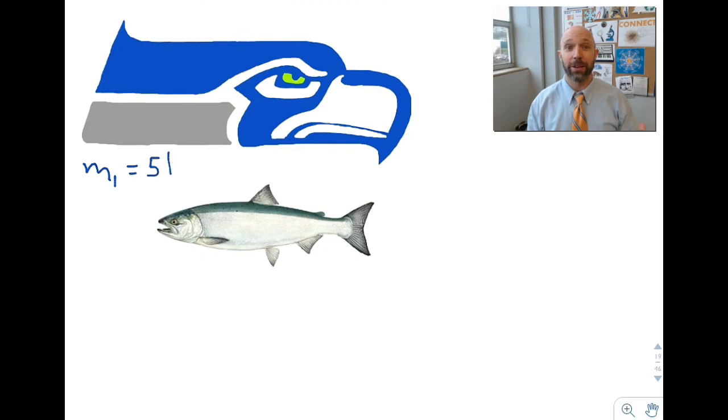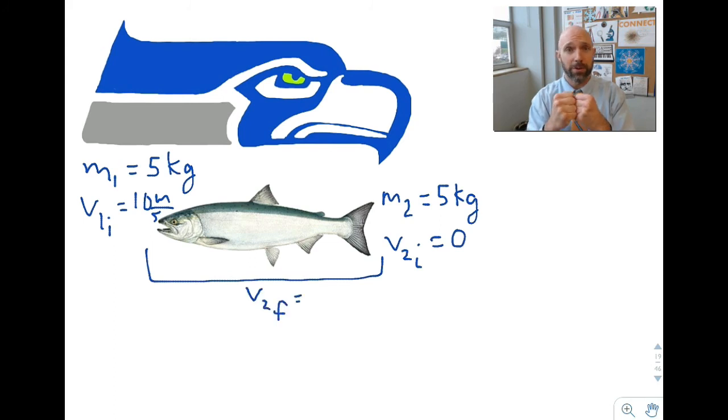All right that's more like it. A real seahawk. Maybe not to scale. Its mass is five kilograms. It's going 10 meters per second. The mass of the fish is also five kilograms. It's pretty big. It's not moving so its velocity is zero. We want to know how fast they're going after the collision.